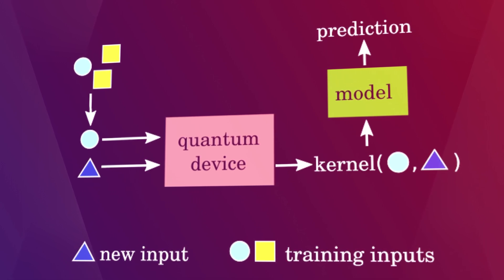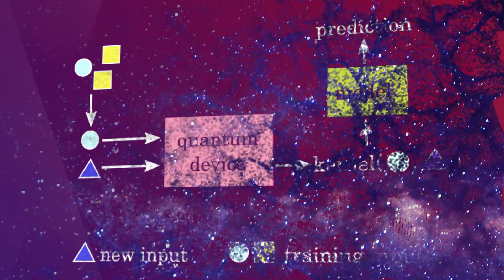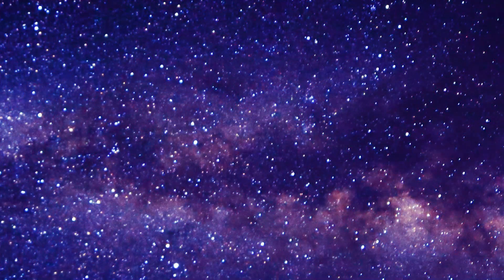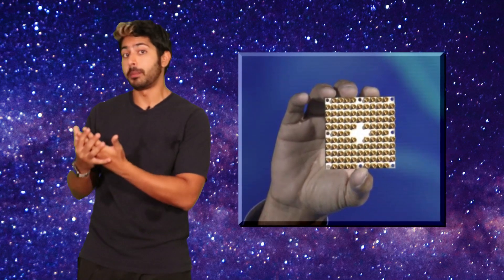So the estimates from a quantum device can be fed into a standard kernel method, like a support vector machine. Although inference and training are done classically, they can be augmented with the quantum device. So we can think of the first generation of quantum computers as partially programmable special purpose devices that can accelerate certain tasks in machine learning, just like GPUs did for deep learning.